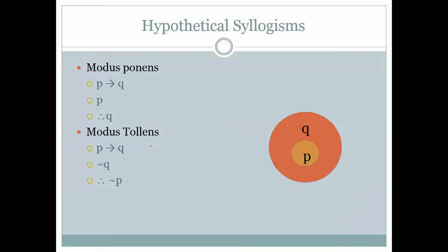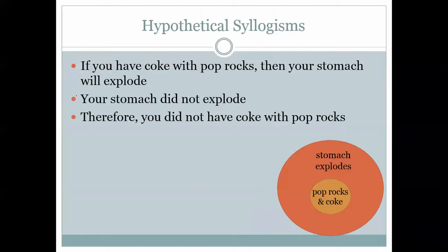There are other ways to symbolize these things — sometimes people use a different arrow style, or a different not-sign instead of the tilde, but it's just different notation. Using the Pop Rocks example: if you have Coke with Pop Rocks, then your stomach will explode. Your stomach did not explode, therefore you did not have Coke with Pop Rocks.